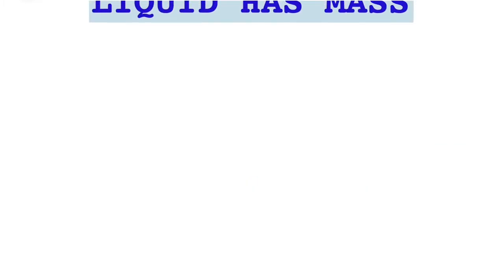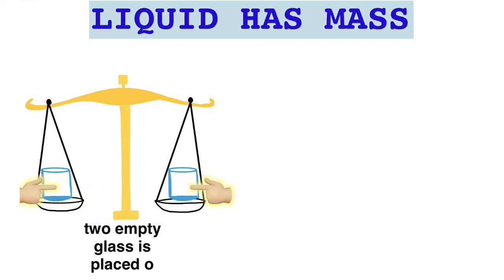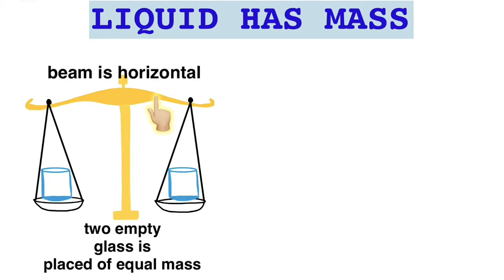Let's see how we can prove that liquid has mass. Here we have taken a beam balance. In both pans of the beam balance we have placed two empty glasses. Both glasses have equal mass, so now the beam of the beam balance is in horizontal position.